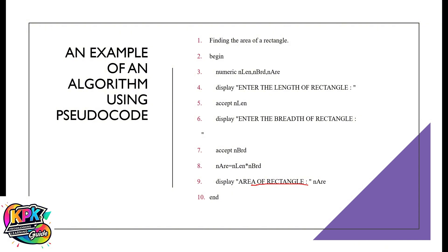First, we start. We declare variables: one variable is the length, one variable is the breadth, and one variable is the area. The numeric type notation tells us that all the values going into these containers must be numbers. So we have container one for length, container two for breadth, and container three for area. We then display to the outside world to enter the length of the rectangle. We input the length — let's say the person says the length is two. Two is stored in the variable 'length'. Then we display to the outside world to enter the breadth. The user enters their number — let's say three. The three comes into the 'breadth' container. Anytime you call this container, you're going to find three there.